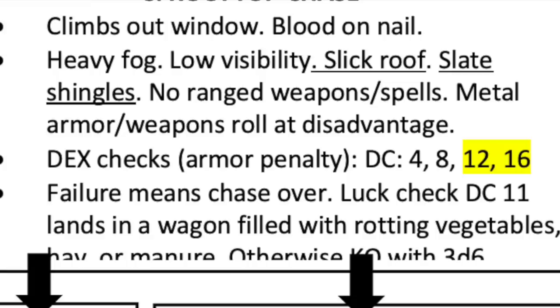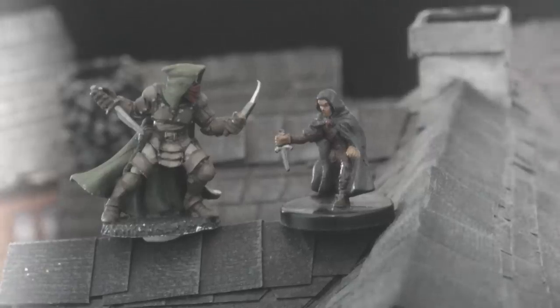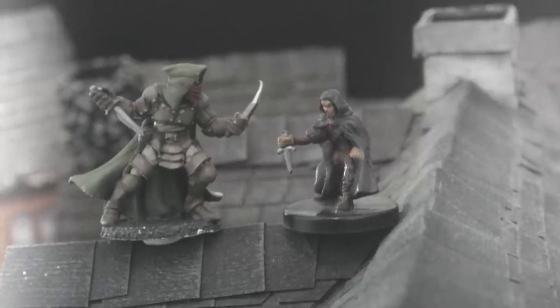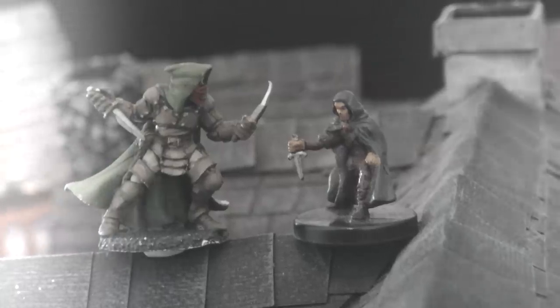If a character fails a jump, have them make a luck check DC 11. If they succeed, they suffer only minor scratches but are out of the chase — landing in a cart filled with hay (if you're feeling kind) or manure (if the player is being annoying). If they fail the luck check, they fall three stories, are knocked unconscious, and take 3d6 damage. If both the assassin and a player make that last jump, have fog surround them so other characters can intervene.